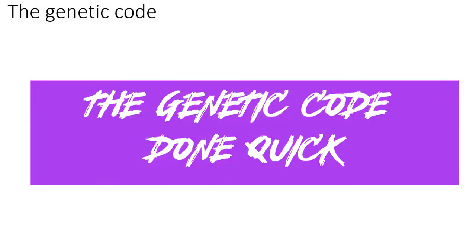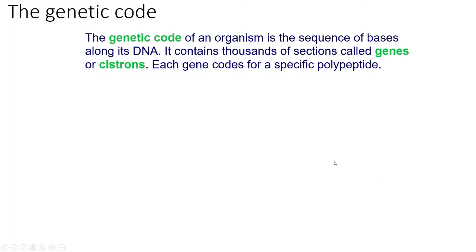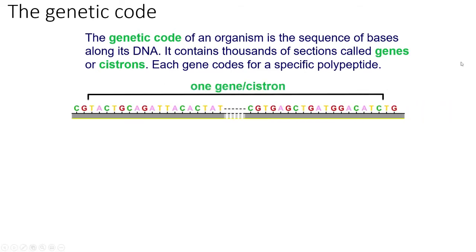In this video we're going to look at the genetic code and the basis for the genetic code. You should be reasonably familiar with it. The genetic code of an organism is a sequence of bases along its DNA. It has thousands of sections called genes or cistrons. Each gene codes for a specific amino acid, so a specific polypeptide.